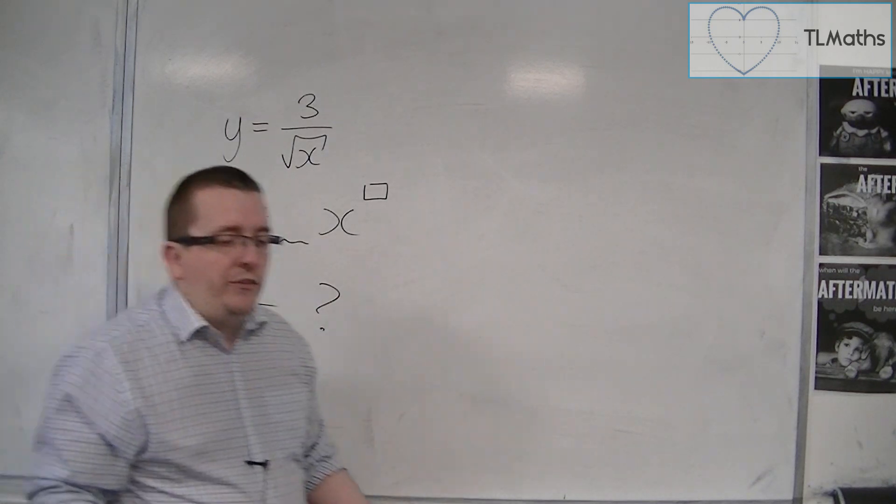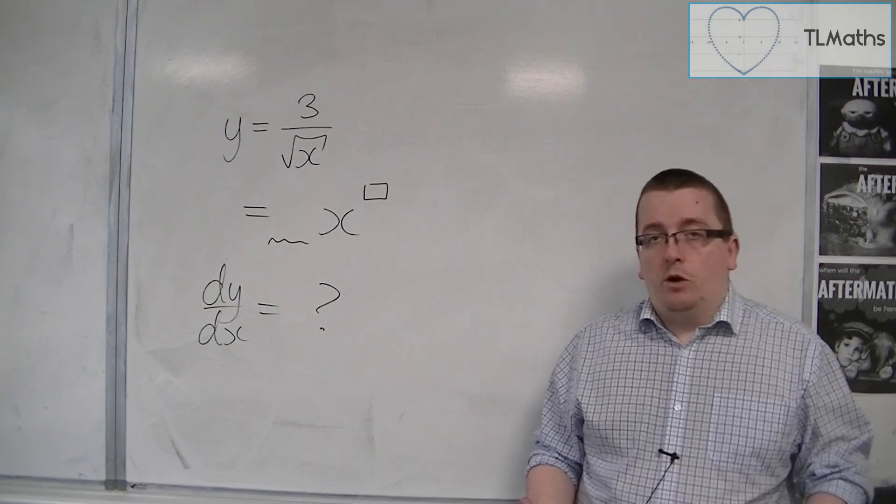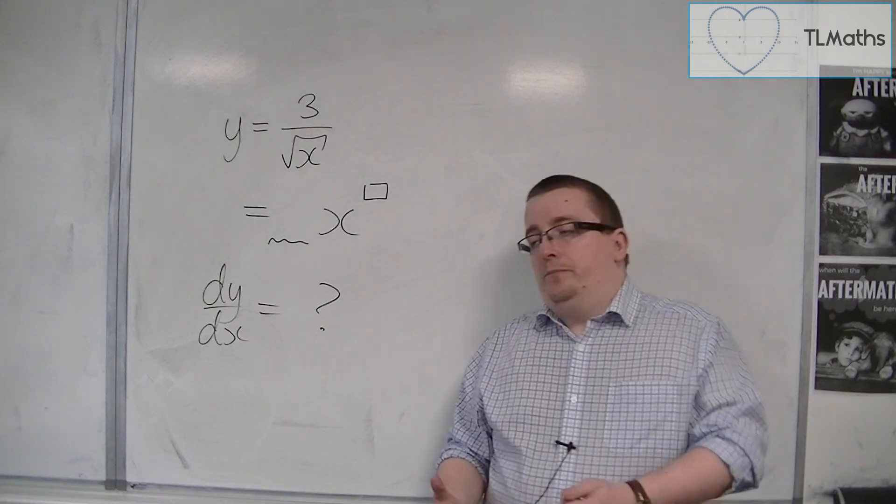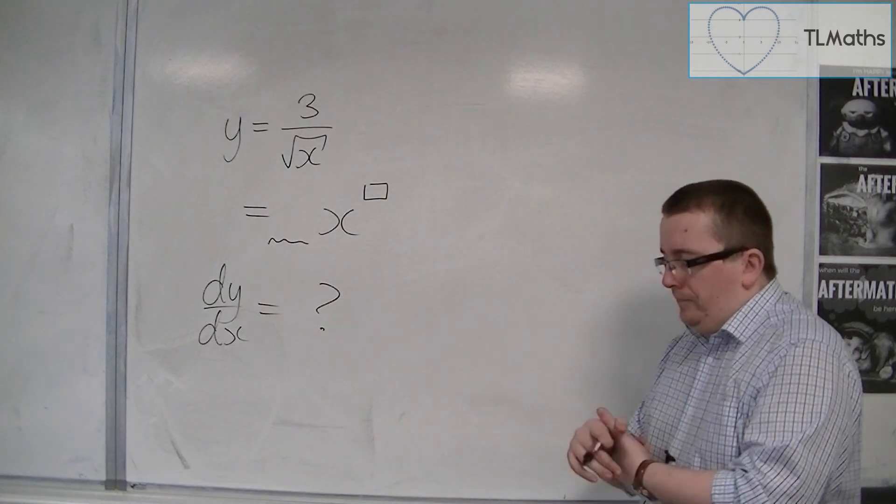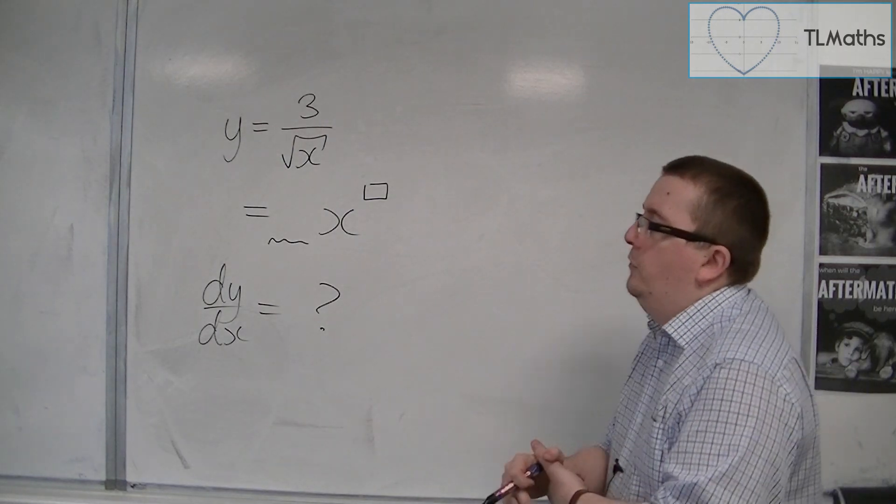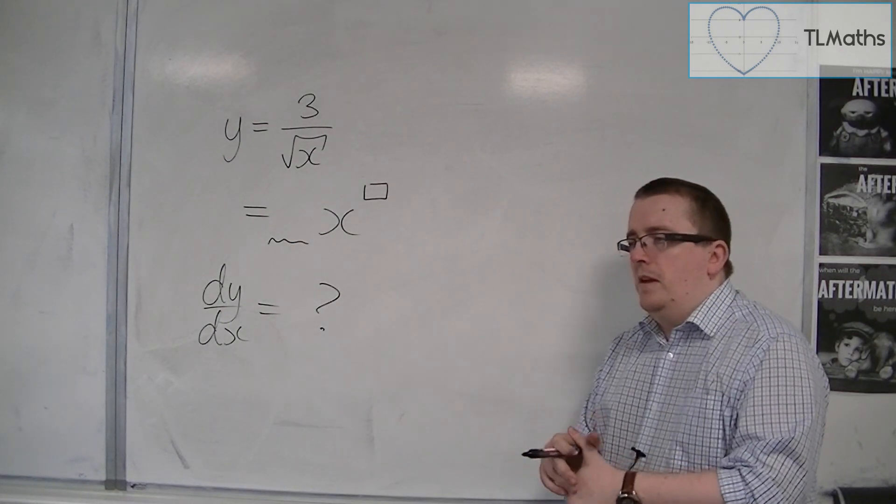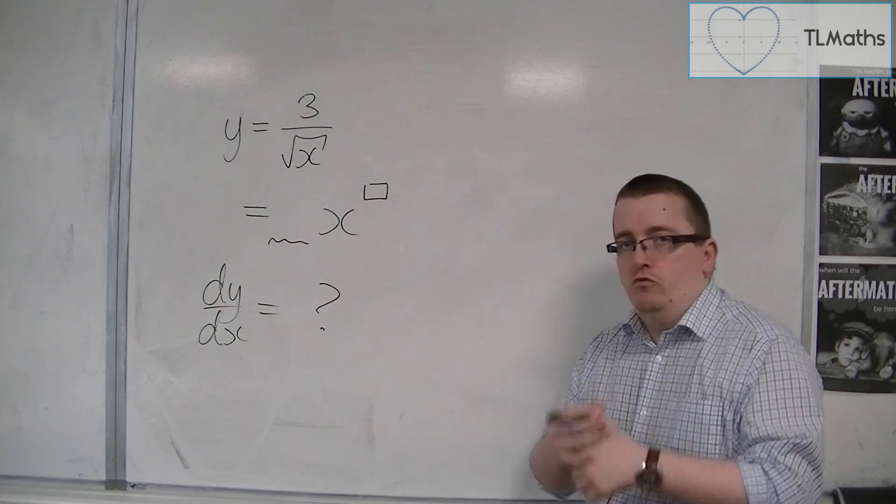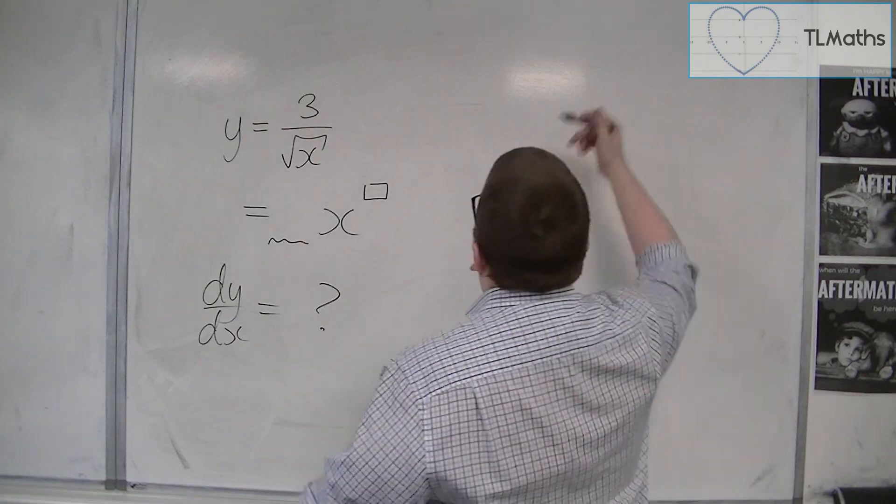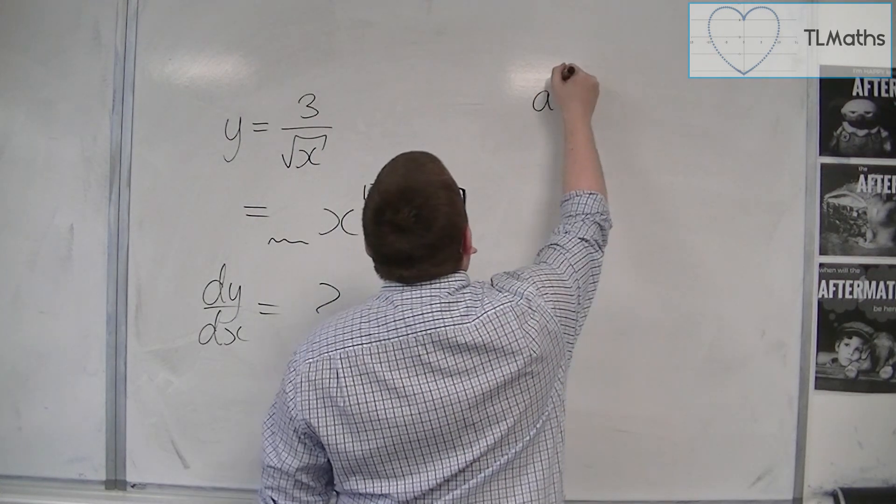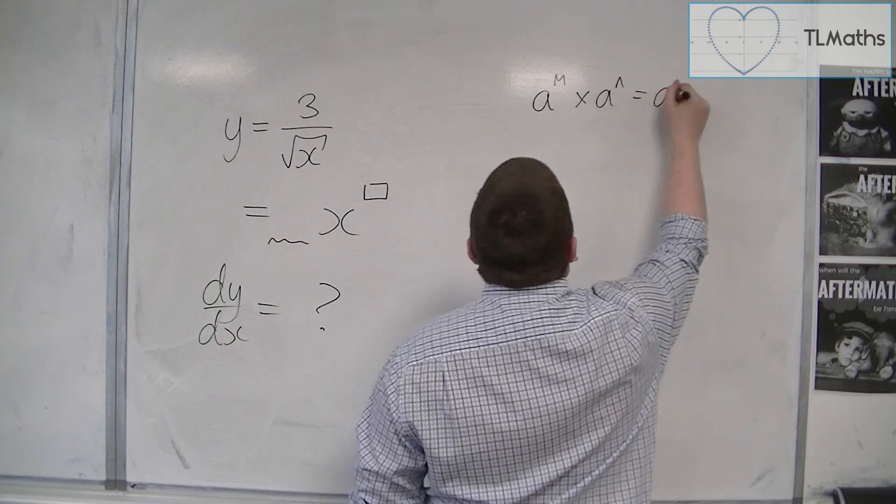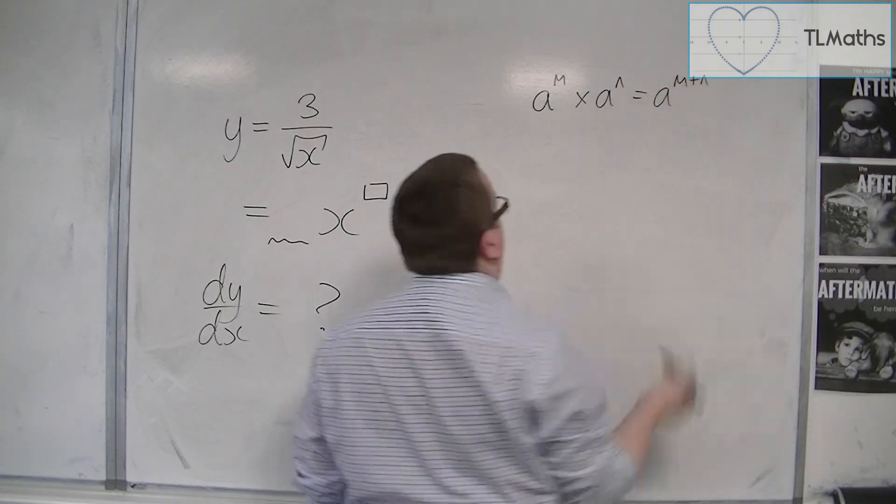So that's the process that we need to go through. So the laws of indices - the ones that we should remember are things like a to the m times a to the n is a to the m plus n.